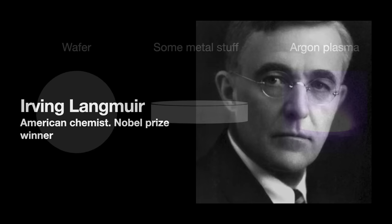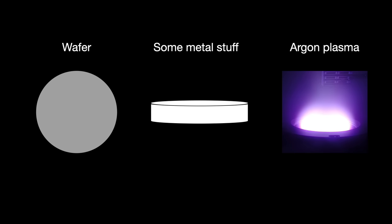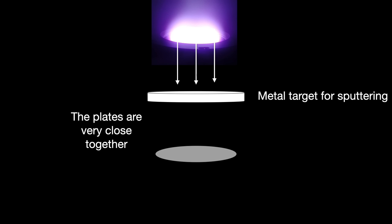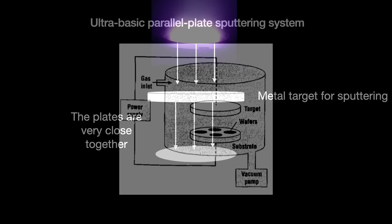Here's how sputtering works: a wafer, a metal material, and some argon plasma are introduced into a vacuum chamber. The energized argon ions are accelerated into the metal material. The impact of those ions physically smashing into the metal causes metal atoms and molecules to fly off into the vacuum. They then cross about 10 centimeters of vacuum space towards the wafer, where they accumulate as our desired metal thin film. Yes, this is what happens — I am not joking.